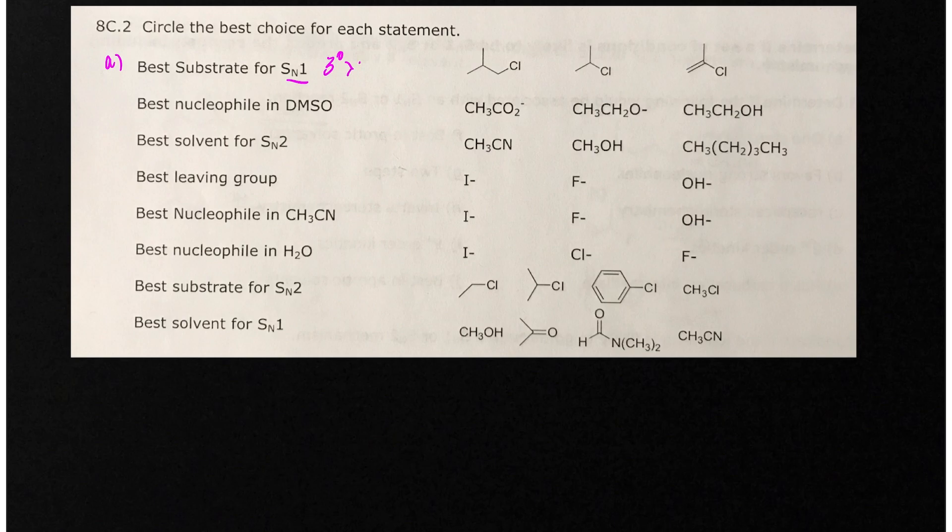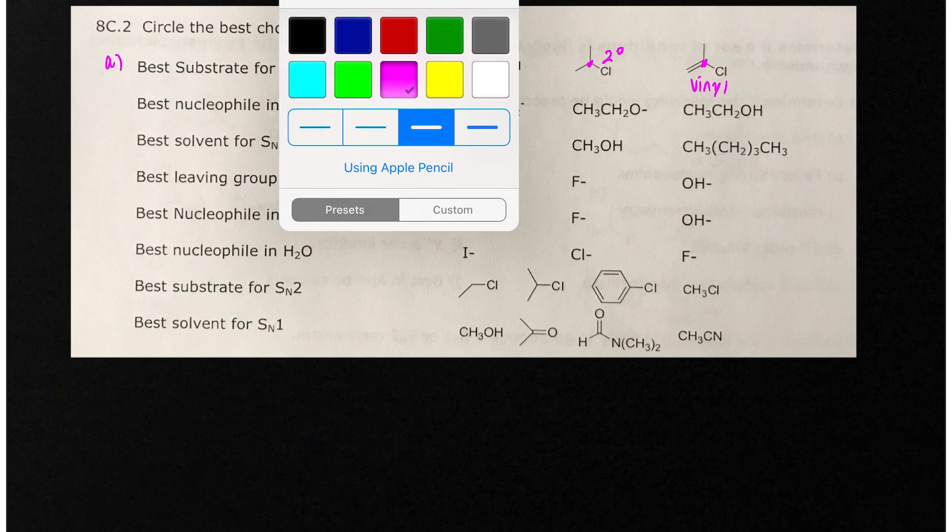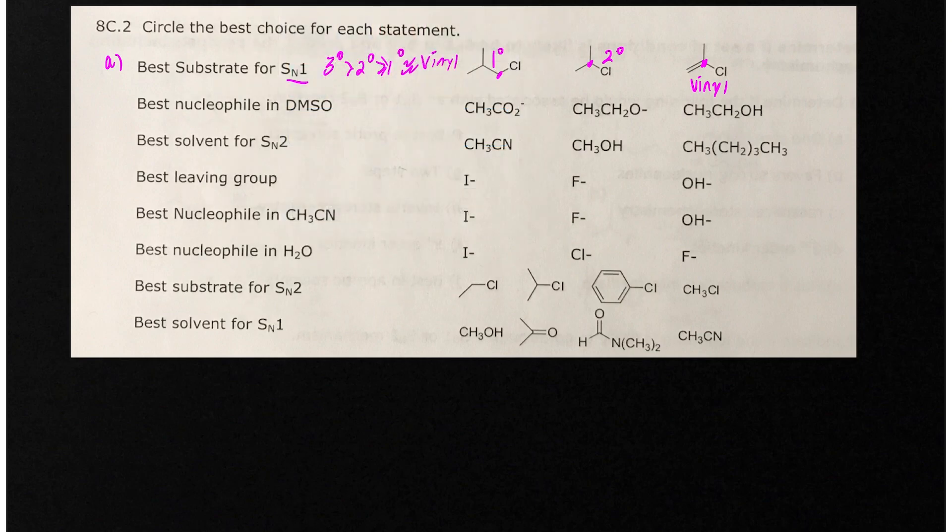that's going to be tertiary, it's better than secondary, it's better than primary, definitely. Primary and vinyl never react. This is vinyl, that means the alpha carbon is on the double bond. This is secondary, and this is primary. So that means that the best substrate is going to be the secondary alkyl chloride.